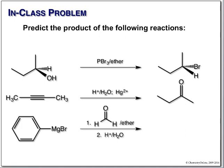The first step involves the mercury sitting on the pi cloud, activating the carbon toward substitution. Water then adds to one of those carbons, and you wind up with the enol.